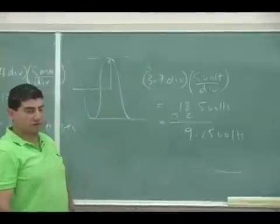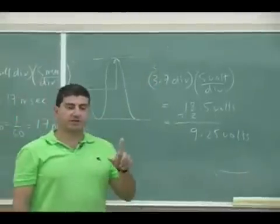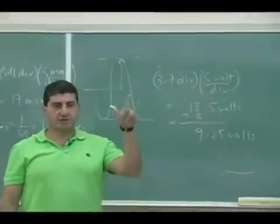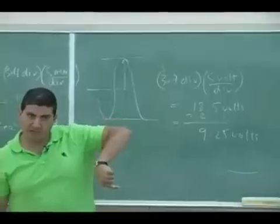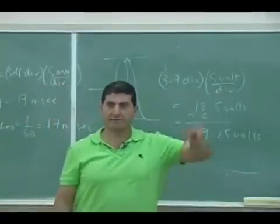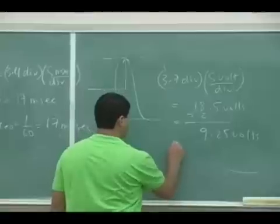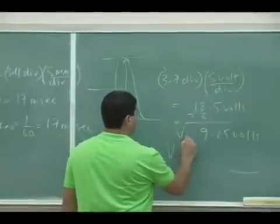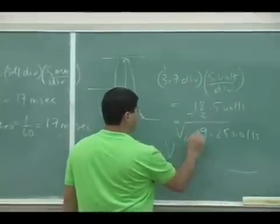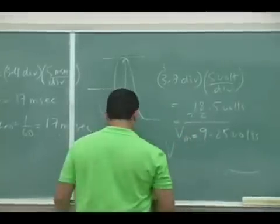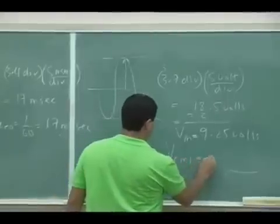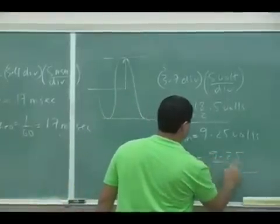Nine point two five volts. But the voltmeter reads the root mean square of that, so divided by root two. So this is known as the maximum voltage, right, and the root mean square voltage is going to be nine point two five divided by root two.